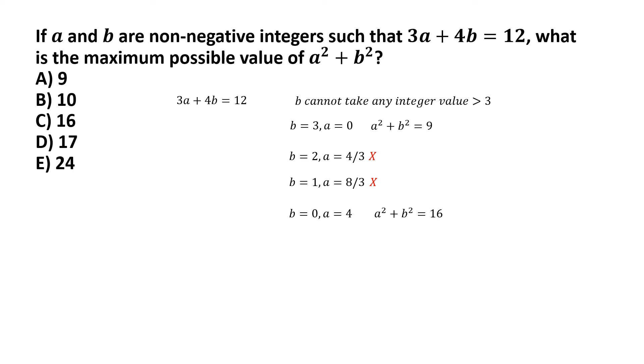So, we have pretty much exhausted all possible sets of values that b can take, and we also solved for corresponding values of a in the process. It seems like there are only two sets of values that will allow a and b to be non-negative integers and at the same time satisfy the constraint 3a plus 4b equal to 12. And for those two sets of values, the value of a square plus b square is 9 in one case and 16 in the other case.